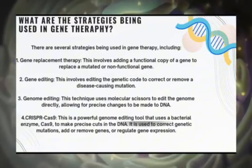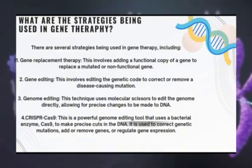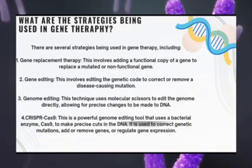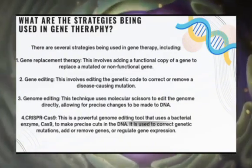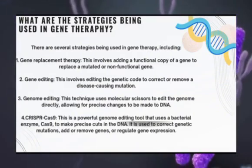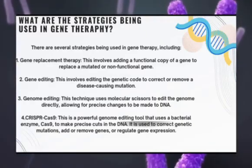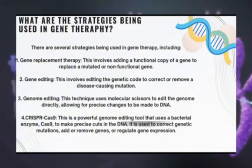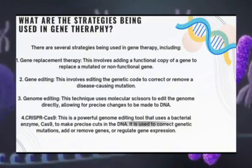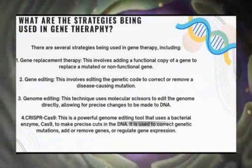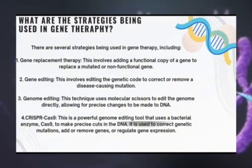Number five, gene augmentation — this involves adding extra copies of a gene to increase its expression and restore normal function. Number six, viral vectors — these are used to deliver therapeutic genes into cells; modified viruses are used as delivery vehicles to target and infect specific cells with the therapeutic gene. Number seven, non-viral vectors — these are non-viral delivery systems such as nanoparticles or liposomes that can be used to deliver therapeutic genes into cells. Number eight, gene silencing — this strategy uses certain molecules such as siRNA or antisense oligonucleotides to turn off disease-causing genes by blocking the production of proteins they code for.